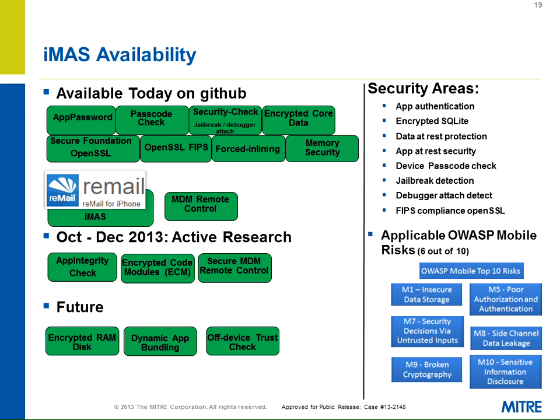Available today on GitHub, we have eight controls: app password, passcode check, and others in that list. We've also taken a look at Remail, an application that Google purchased a few years ago — it's open source. We also have some recent MDM remote control research.